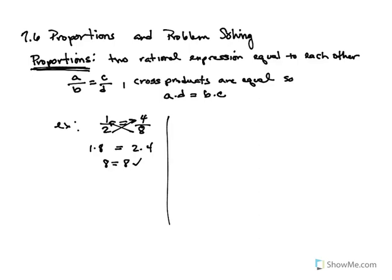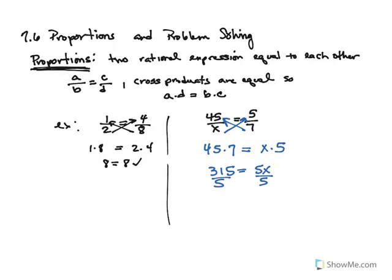So anytime you have a proportion — one rational expression equal to another — you can use the definition of a proportion to solve your problem. For example, 45 over X equals 5 over 7. In Section 7.5 we solved this by identifying the LCD and clearing fractions. But 7.6 says: if you have just two fractions equal to each other, you don't need the LCD process. Instead, cross-multiply: 45 times 7 must equal X times 5. So 315 equals 5X, and dividing both sides by 5 gives X equals 63.